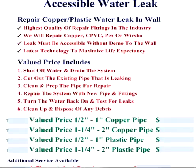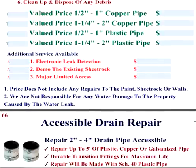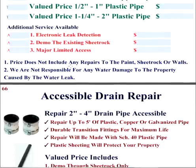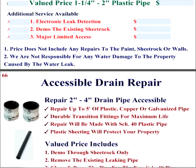Then you're going to get into above-ground issues — accessible water leaks. There are additional tasks for limited access, for example if it's in an attic or underneath a mobile home. We have clauses in this section that the price does not include any repairs to paint, sheetrock, or walls, forcing the technician to deliver that message. If your company chooses to do that, you can include it in your proposal but I would separate it. You're not responsible for any water damage to the property caused by the water leak — this protects you if a customer comes back two years later with mold issues and didn't get a restoration company in to dry it out.